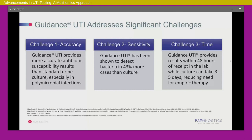Looking at some of the challenges and advantages this test provides: from an accuracy standpoint, PCR clearly provides more accurate results both from sensitivity and specificity, especially sensitivity where we see about 43% more bacteria detected than with standard urine culture. Most importantly, there's a time component — standard urine culture takes three to five days, whereas we typically produce results in about 24 hours with our current methodology. Moving into the fall with an enhanced methodology, we see this result coming down to about 14 to 16 hours.